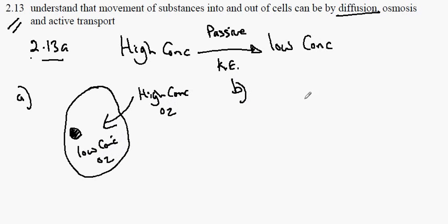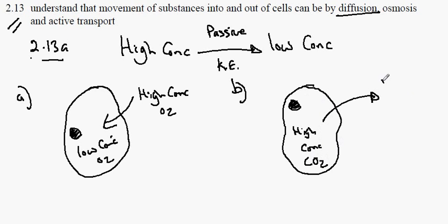In the opposite direction, we can see the same cell carrying out respiration and producing a high concentration of carbon dioxide, CO2, inside the cell. This will diffuse out of the cell to a region of low concentration of CO2.